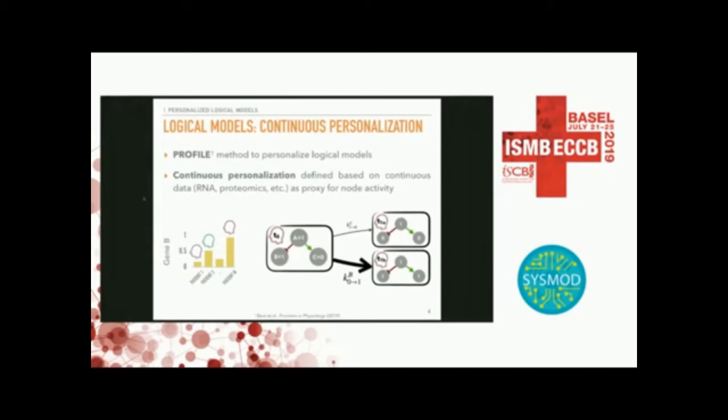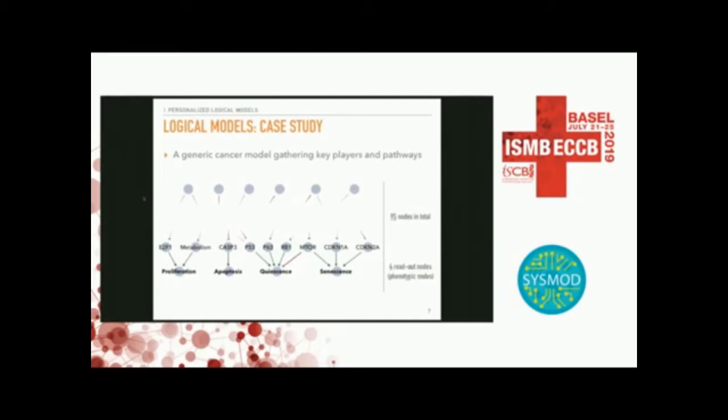Now we would like to apply this with a real model, because of course the three-node example is a toy model. In the following examples, I will focus on a very generic cancer model gathering key players and pathways — a logical model with around 100 nodes. We defined four phenotypic readout nodes to help interpret the state of the model: proliferation, apoptosis, quiescence, and senescence. That's very broad, but it's supposed to model how things work in basic cases.